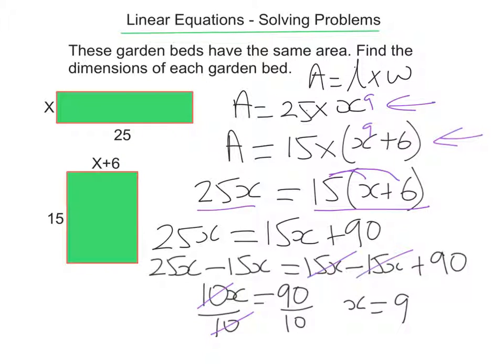The question actually asks to find the dimensions of each garden bed. So for the top garden bed, its dimensions are 9 and 25. And for the bottom garden bed, because x plus 6 is 15, its dimensions are 15 times 15 and is actually a square.